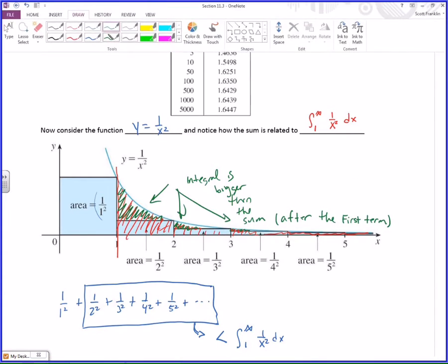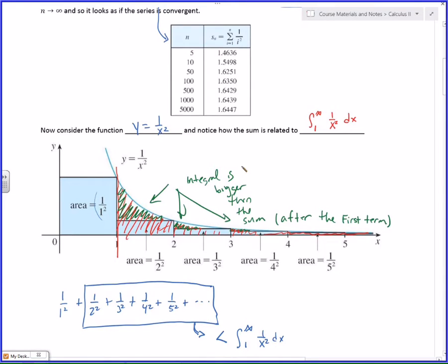So, here's my claim. All of this to say that the sum from n equals 1 to infinity of 1 over n squared is going to be less than 1 over 1 squared plus the integral from 1 to infinity of 1 over x squared dx.